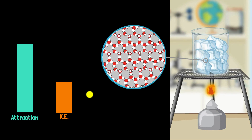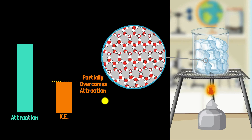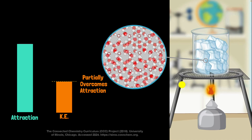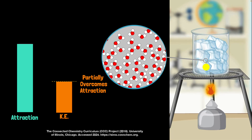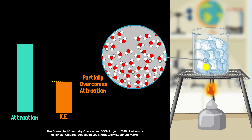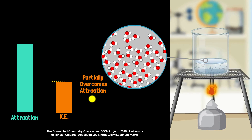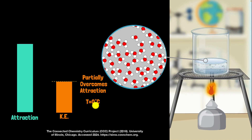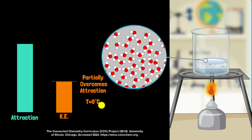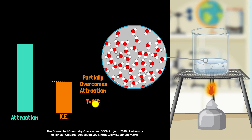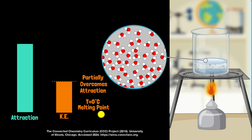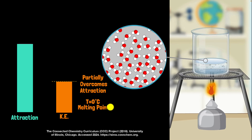At one particular point, the kinetic energy of these particles will be high enough that it can partially overcome the forces of attraction. And when that happens, the atoms and molecules will no longer be locked in place — they will start moving around. This is when solid turns into liquid; in our case, ice starts turning into liquid water. And this temperature at which it happens, for water, it happens to be about zero degrees Celsius. The temperature where solid turns into liquid is what we call the melting point. So the melting point of water is zero degrees Celsius.